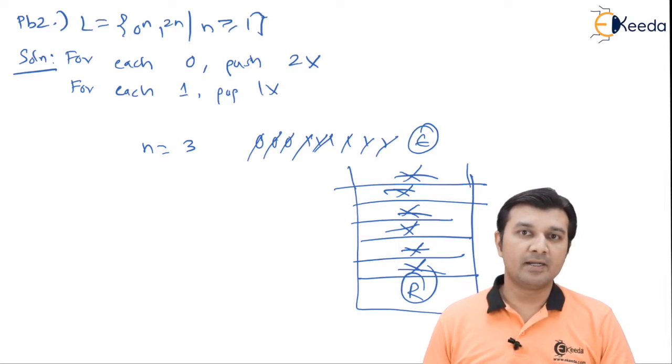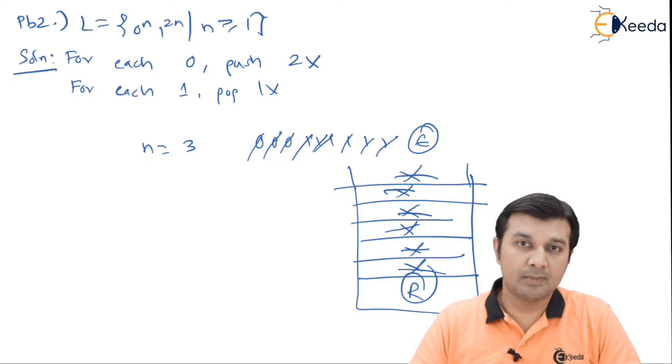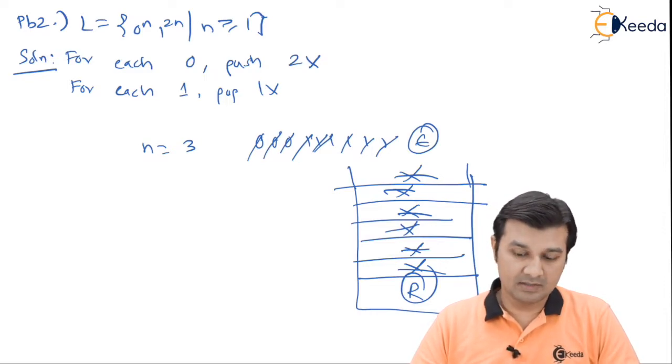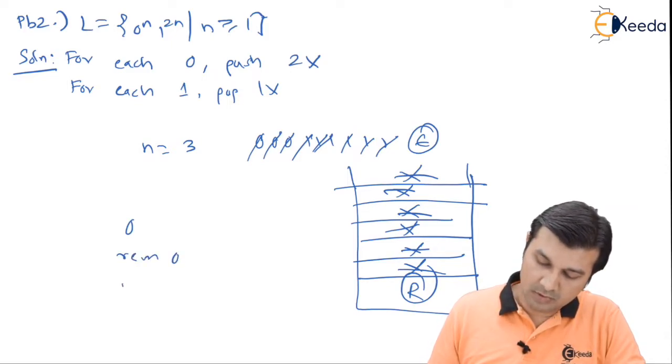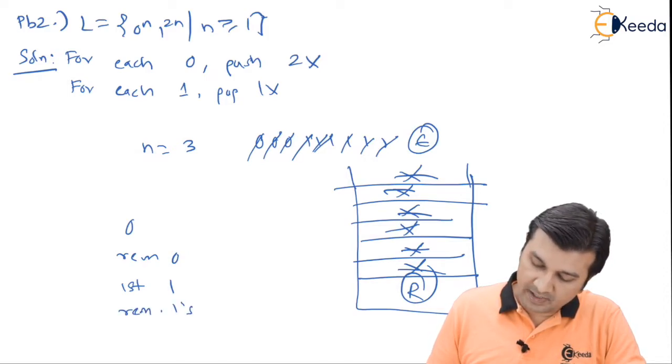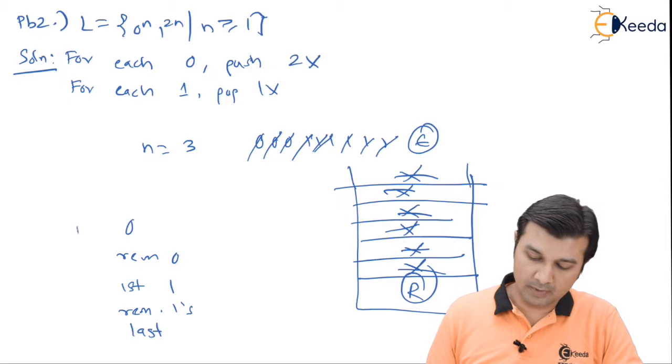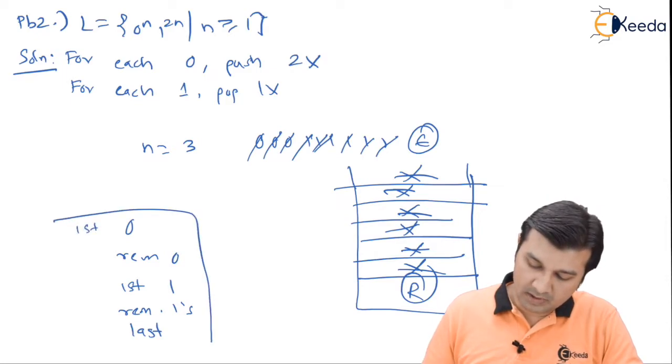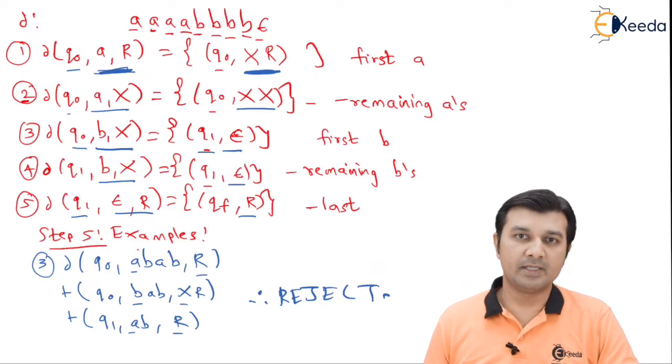This logic is working fine. Let's try to implement the logic. When I come to implementation, it will by default say: first 0, remaining 0s, first 1, and remaining 1s, followed by the last thing which concludes my pushdown automata. These are the 5 things I'm going to have. Let's get started with the implementation.